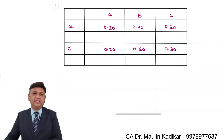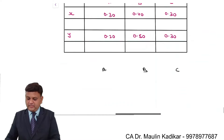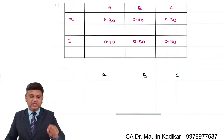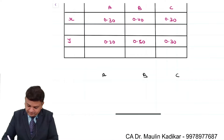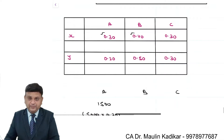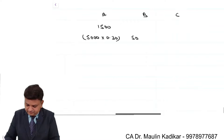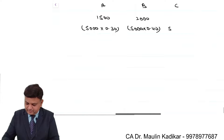For part one, we need to calculate the investment amount in each of the three securities A, B, and C. For portfolio X, investing 5000 rupees: 5000 into 30% comes to 1500, 5000 into 40% comes to 2000, and 5000 into 30% comes to 1500.